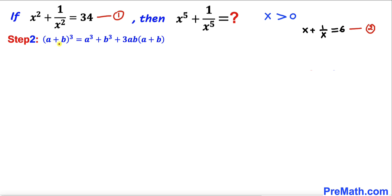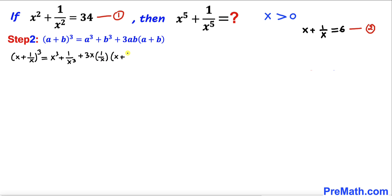Next step: recall the identity (a + b)³. If a = x and b = 1/x, then (x + 1/x)³ = x³ + 1/x³ + 3·x·(1/x)·(x + 1/x). The x and 1/x cancel, and we know x + 1/x = 6 from equation two, so the left side is 6³ and the remaining factor is also 6.